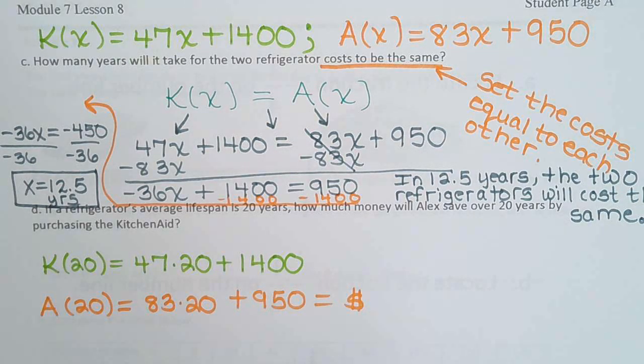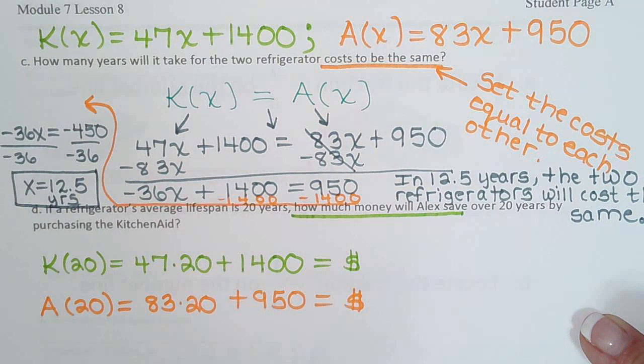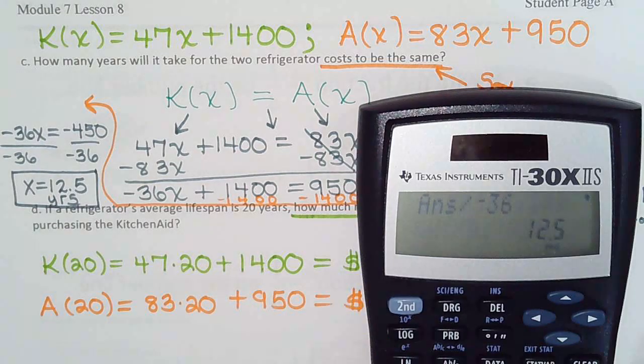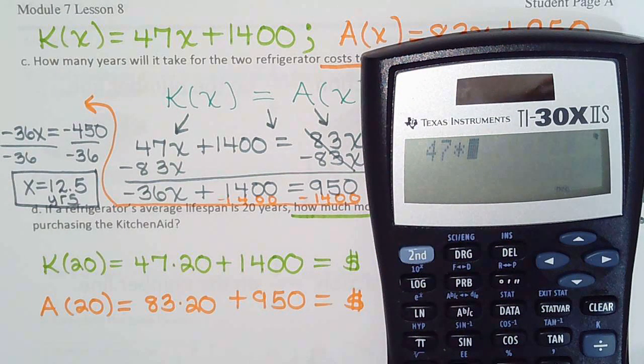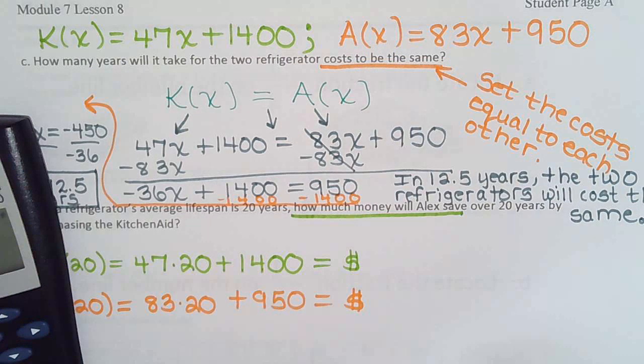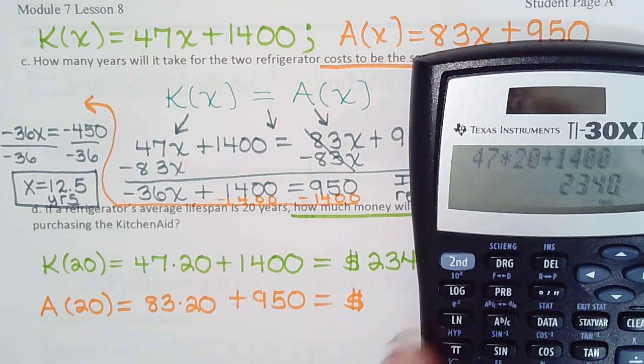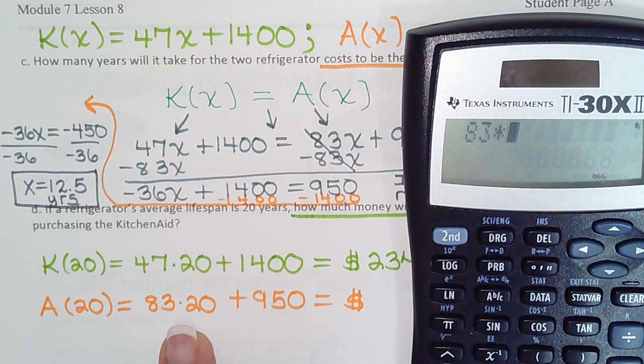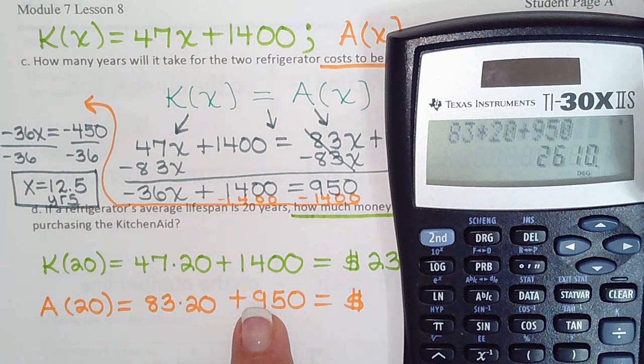So now let's figure out what these costs are. Then we can subtract them because it says how much money will Alex save. So $47 times 20 plus $1,400. The KitchenAid will cost $2,340. And the Amana, 83 times 20 plus $950 will cost $2,610.